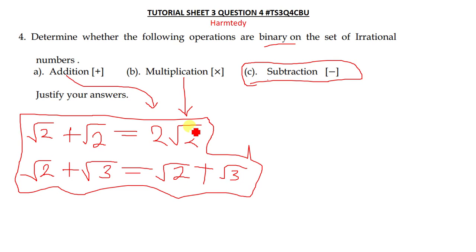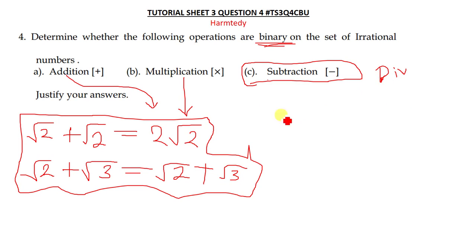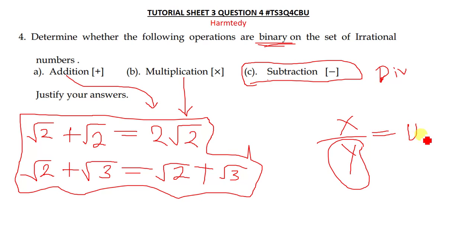Now what about division? Division is not a binary operation on the set of irrational numbers. When you are dividing two numbers x and y, if you set y equal to zero, the answer becomes undefined. This implies that division is not a binary operation on the set of irrational numbers.